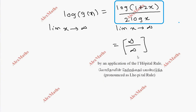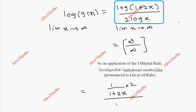By applying L'Hôpital's rule, we differentiate numerator and denominator. The numerator: differentiate log(1 + 2x) gives (1 / (1 + 2x)) times 2, by the chain rule. The denominator: differentiate 2 log x gives 2 times (1 / x).